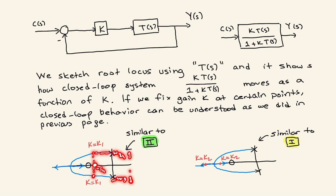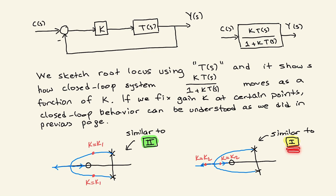If you increase gain to k2, the closed-loop system will have two real poles. In this case, applying a Dirac delta gives a solution with no oscillations — no cosine or sine terms — so this is an overdamped response. At k1 with complex poles there are oscillations, giving an underdamped response. If you select gain k at the point where both poles meet, that is the critically damped point.